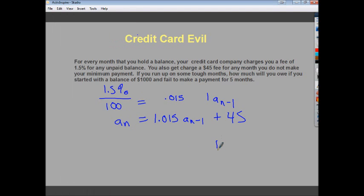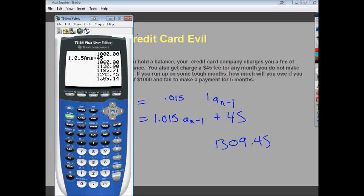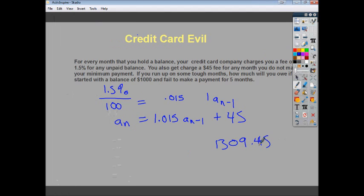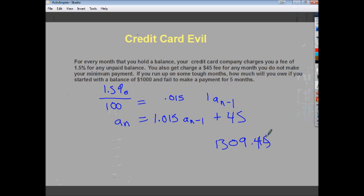So after five months, I'm not paying my $1,000 bill off. I currently owe $1,309 and I think it was 14 cents. But that's it as far as mathematical patterns are concerned. Explicit formulas, recursive formulas, some vocabulary. We talked about how bad credit cards are. So I hope that you can find this useful and that you stayed for the whole thing.